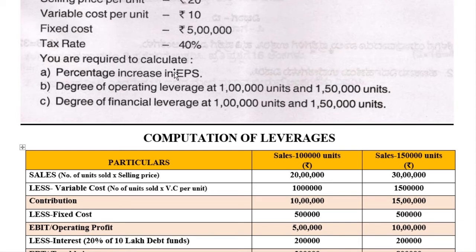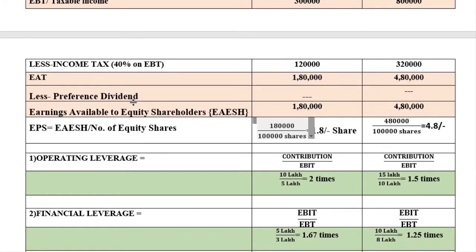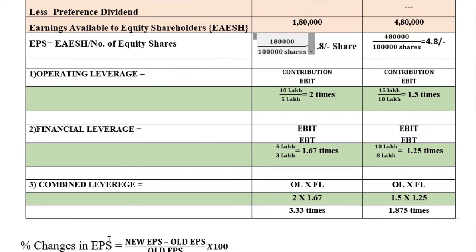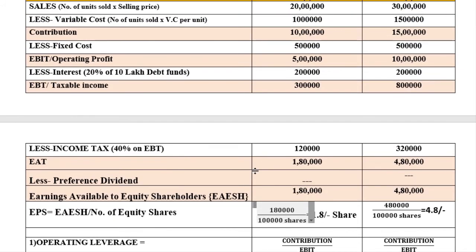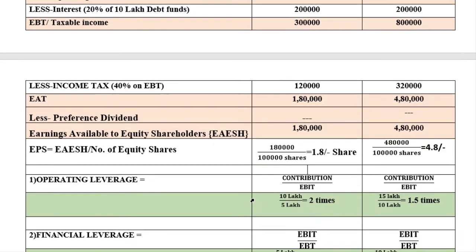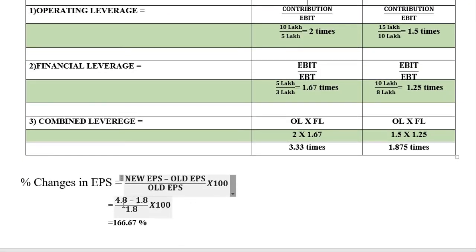Now calculate the percentage increase in EPS. The formula is: (new EPS minus old EPS) divided by old EPS, multiplied by 100. New EPS is 4.80 and old EPS is 1.80. So (4.80 minus 1.80) divided by 1.80 into 100 gives 166.67 percent. The percentage increase in EPS is 166.67 percent.